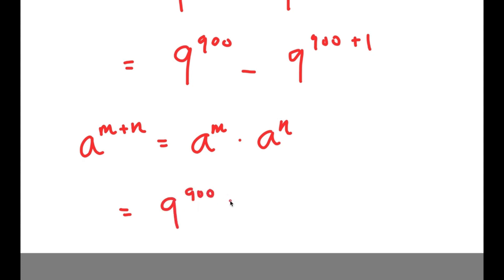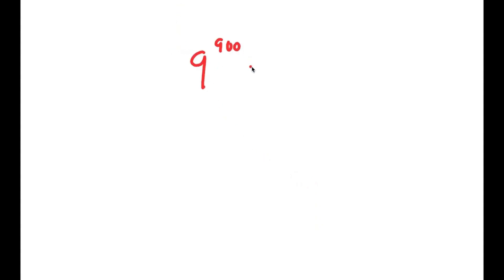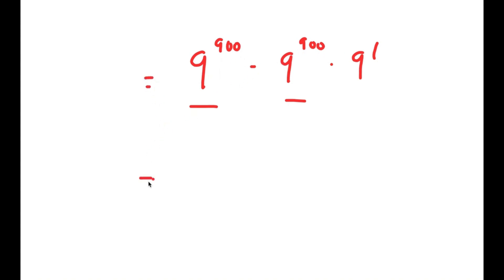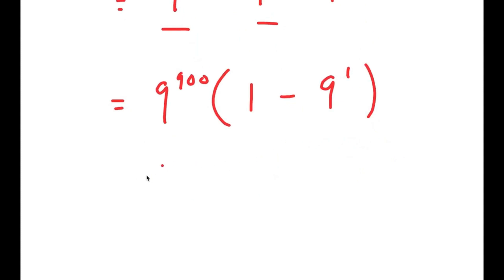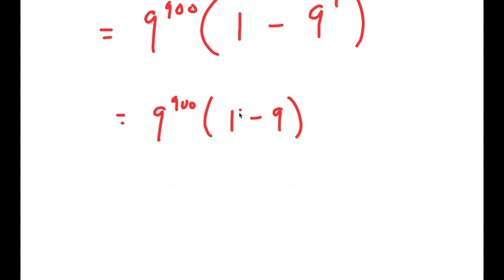So I get 9^900 minus 9^900 times 9^1. Now both terms have 9^900 in them, so I'm going to factor out 9^900, which is what I said I was going to do at the beginning. I get 9^900 times (1 minus 9^1), which equals 9^900 times (1 minus 9). Since 1 minus 9 is negative 8, I get 9^900 times negative 8.